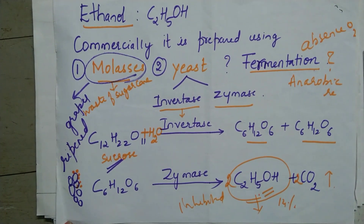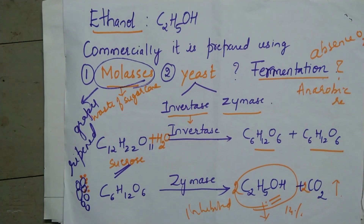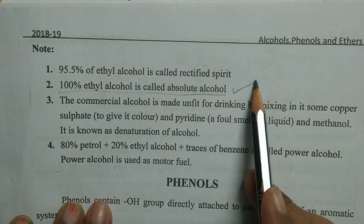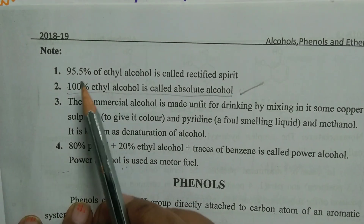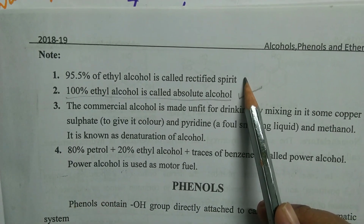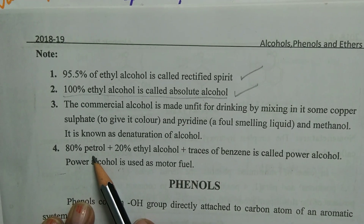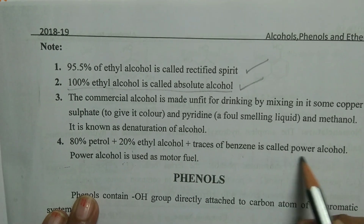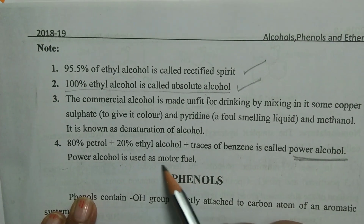100 percent ethyl alcohol is called absolute alcohol. 95.5 percent ethyl alcohol is called rectified spirit. When 80 percent petrol is mixed with 20 percent ethyl alcohol with traces of benzene, it is called power alcohol, and it is used as a motor fuel.